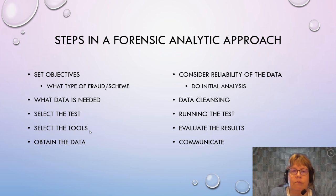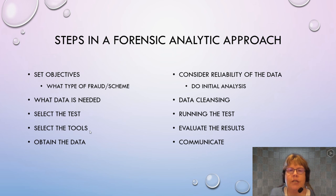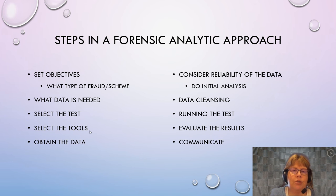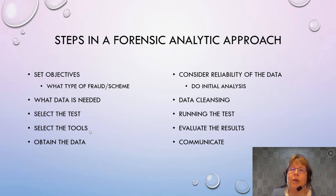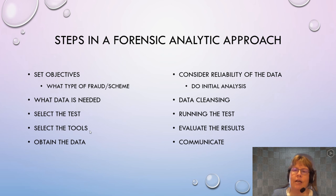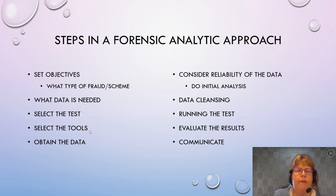Based on that, we try to look at what data is needed. For cash skimming, we would need cash register receipts and other details that might detect sales not put into the cash register. The next steps all go together — you're trying to develop your plan: what data is needed, how would we test for this, and what tools do we need? Can we do this in Excel? Do we need Access? Do we need a more powerful tool, or do we need to program in R or Python?